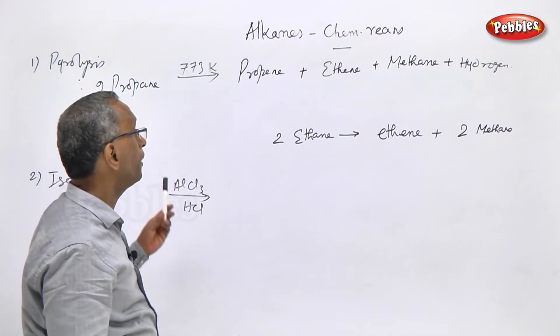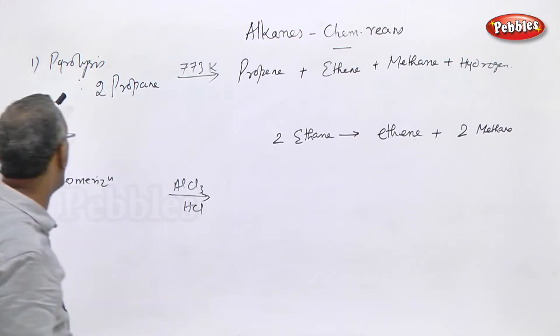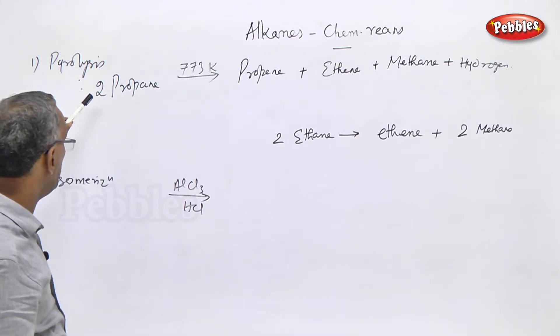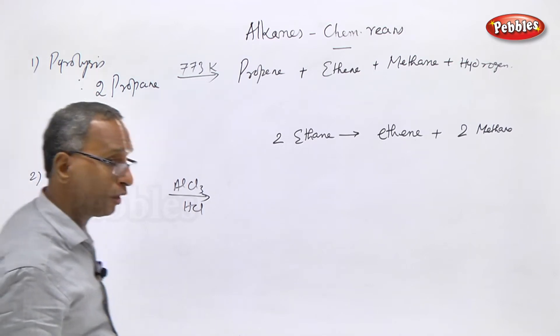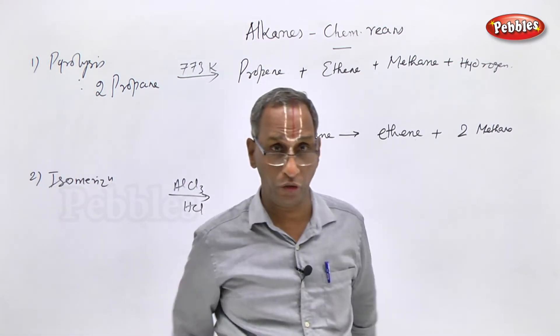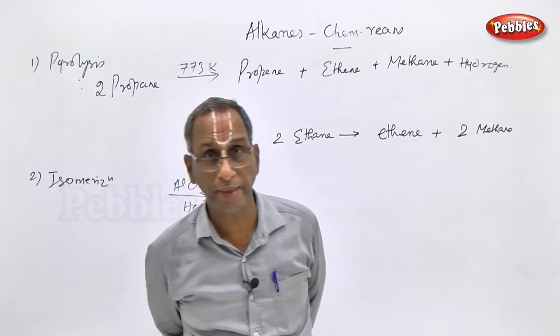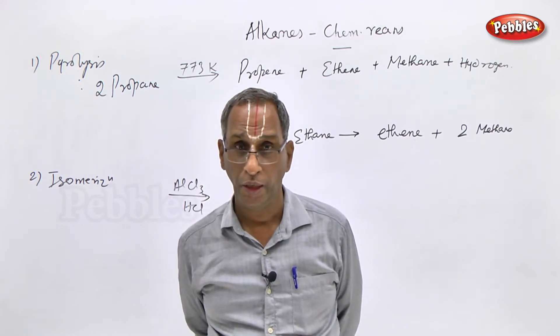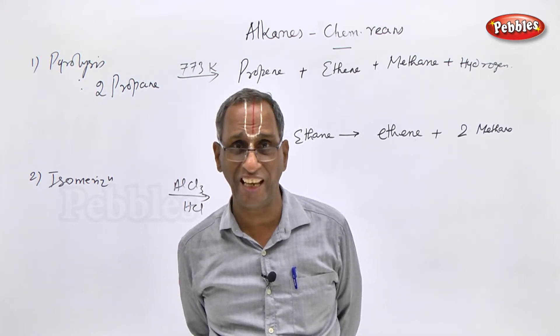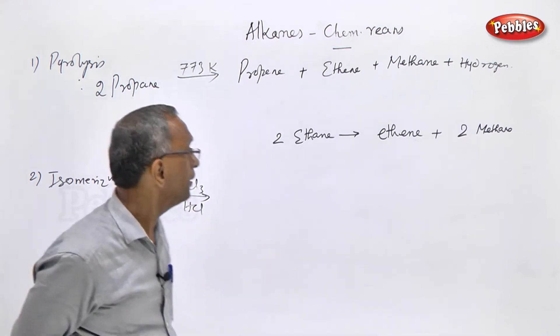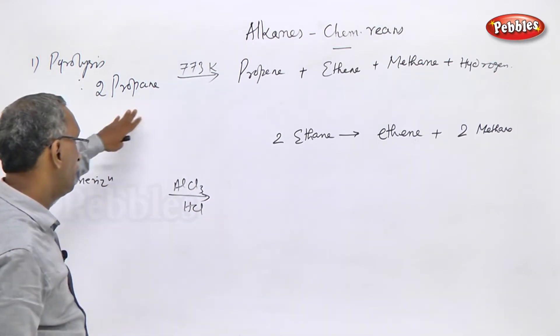The last two important reactions for alkanes: number one is pyrolysis. Pyro means heat, lysis means decomposition. So thermal decomposition by the application of heat. The higher alkanes at high temperature of 500 degree centigrade or 773 Kelvin will be converted to a mixture of lower alkanes and alkenes.